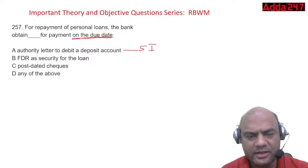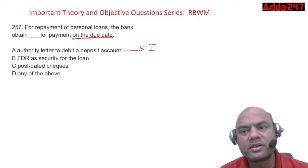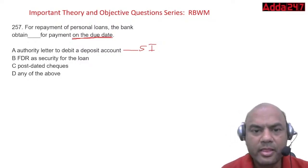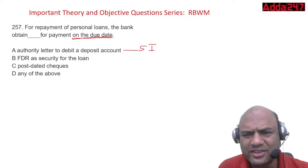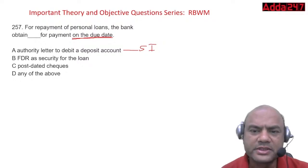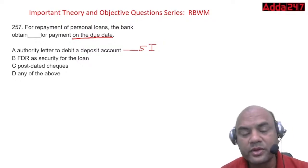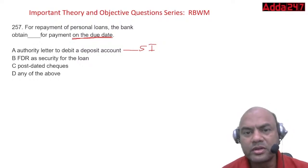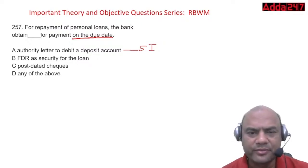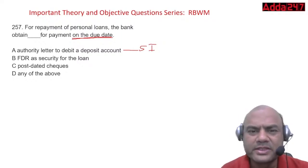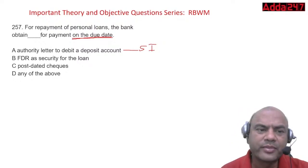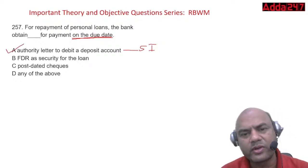Post-dated checks (PDCs) are largely no longer used. Earlier banks used to take 36 PDCs; now even one PDC is enough, and that is taken only for the Negotiable Instruments Act. Otherwise, directly the SI runs everything. The authority letter to debit the deposit account — or SI — is what banks take from the borrower.